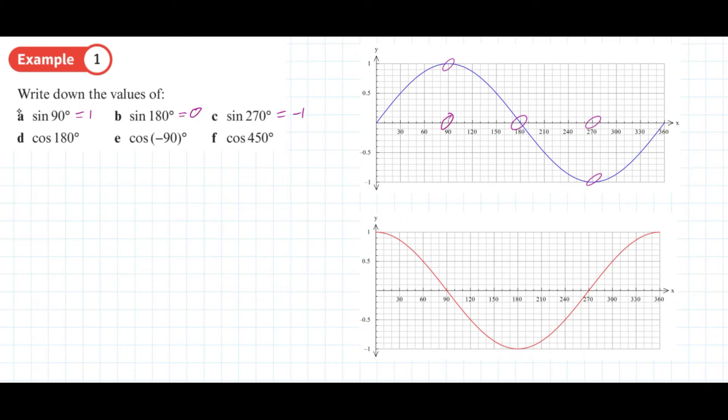Going for the cosines, the first one is relatively straightforward. Again, we just find 180 and we find the conclusion that the cosine of 180 is negative 1.